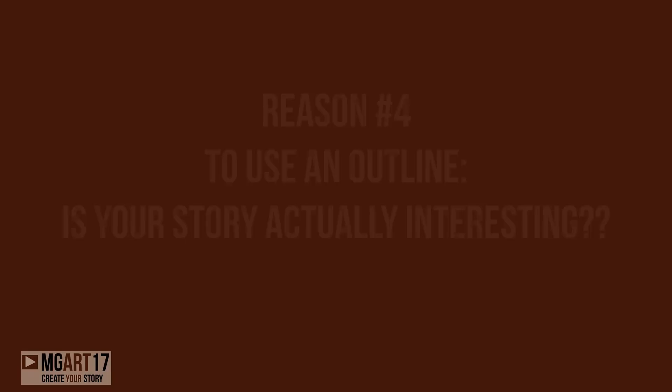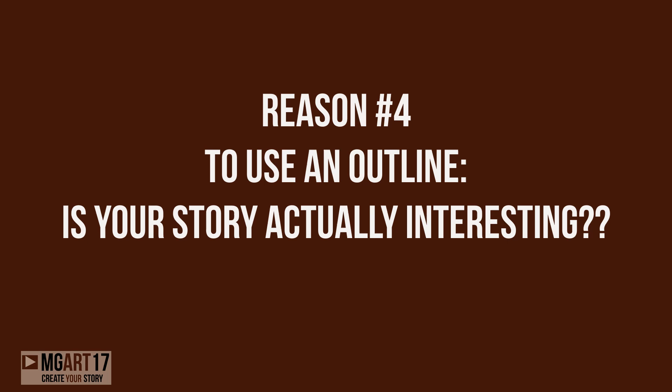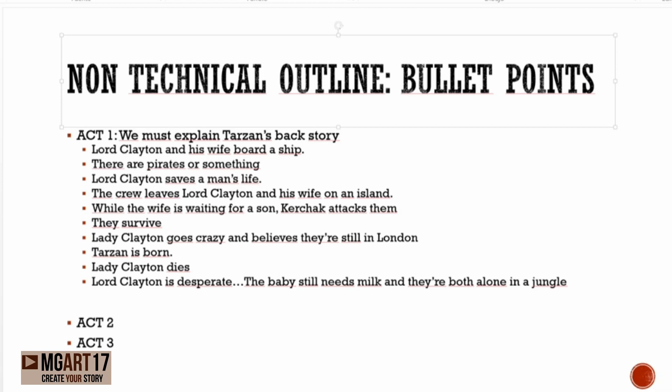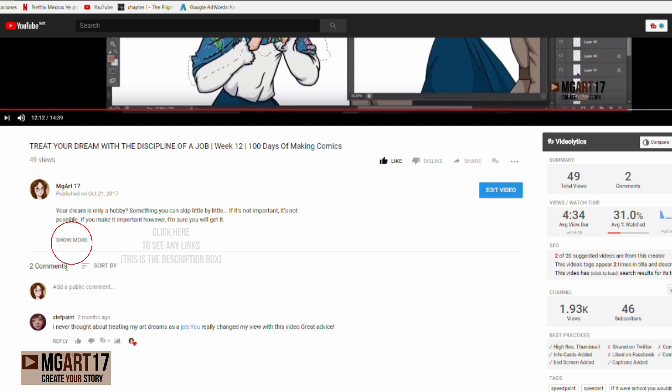Reason number four to make an outline: it lets you see if your story is actually interesting. If your story really is interesting, you will see it in your outline and you will be even more motivated — you'll think 'I cannot wait for my readers to see this part.' If your story is not interesting, you will start noticing it. If you read your outline and you are bored, that means you have to correct it, and you should probably show it to someone else for a second opinion. There are many technical ways of making an outline and I will link resources down below if you want to go deeper.